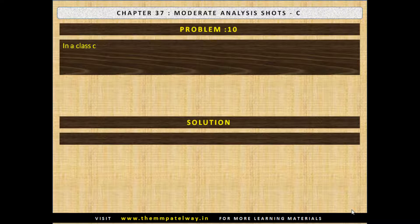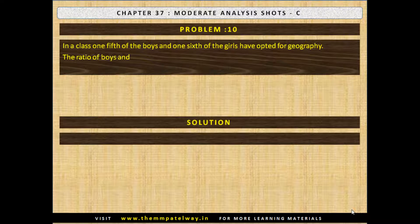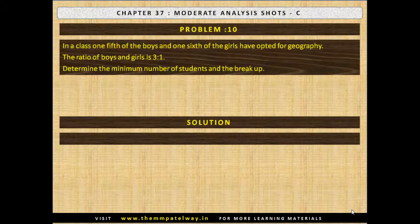Problem No. 10. In a class, one fifth of the boys and one sixth of the girl students have opted for geography. The ratio of boys to girls is 3 to 1. Determine the minimum number of students and the breakdown. The solution is there are 90 boys and 30 girls.